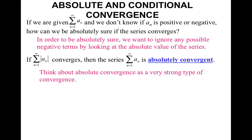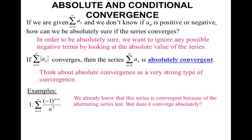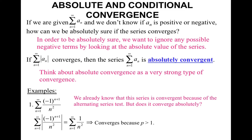Think about absolute convergence as a very strong type of convergence. For example, if we look at this alternating series, we already know it is convergent because of the alternating series test. But does it converge absolutely? I'm going to take the absolute value of this series. When I do that, the negative 1 basically does not matter. So I'm looking specifically at this p-series. Since p is greater than 1, the absolute value of this series converges, so I can say this series converges absolutely.